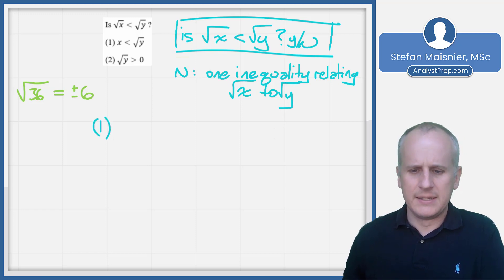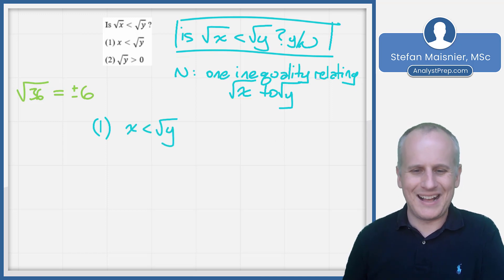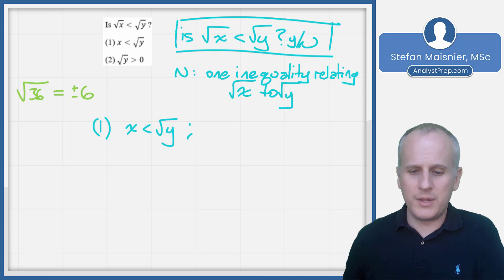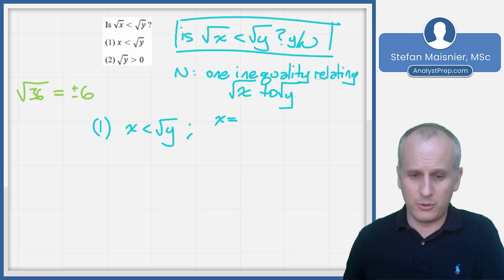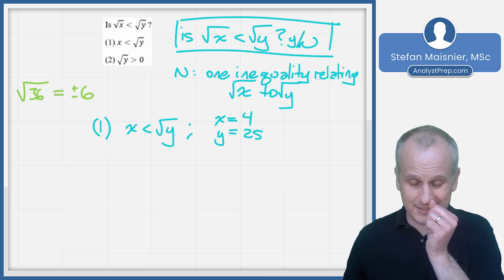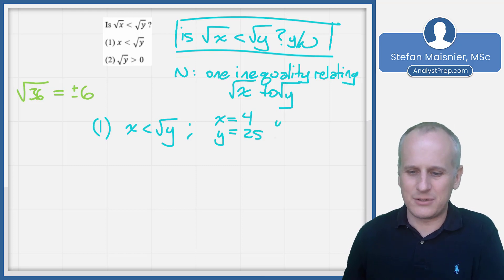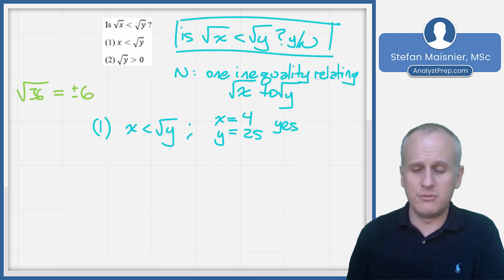Condition 1 says x itself is less than the square root of y. To evaluate this efficiently, we plug in perfect squares. If x equals 4 and y equals 25, then x (which is 4) is less than the square root of 25 (which is 5) — the condition holds. Is the square root of x less than the square root of y? Yes: the square root of 4 is 2, and the square root of 25 is 5, so we get a yes answer.